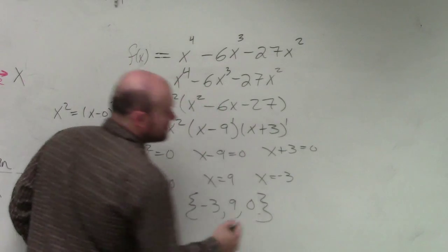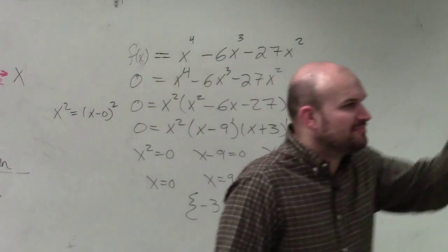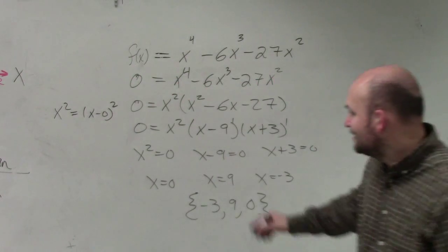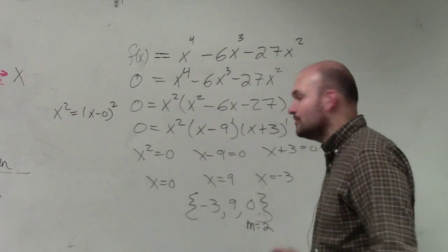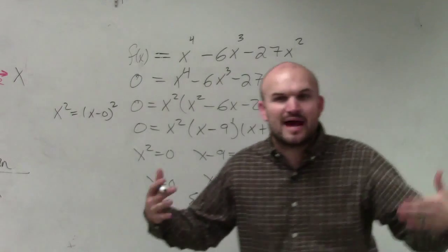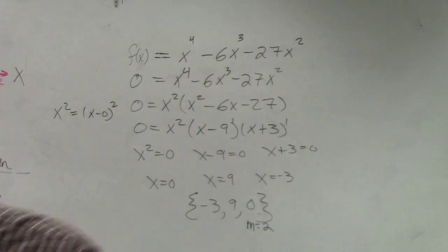But just remember, guys, there's only 3 x-intercepts, but there's four 0's. But this 0 had a multiplicity equal to 2. So that's what allows us to still go by our definition of 4 solutions. OK?